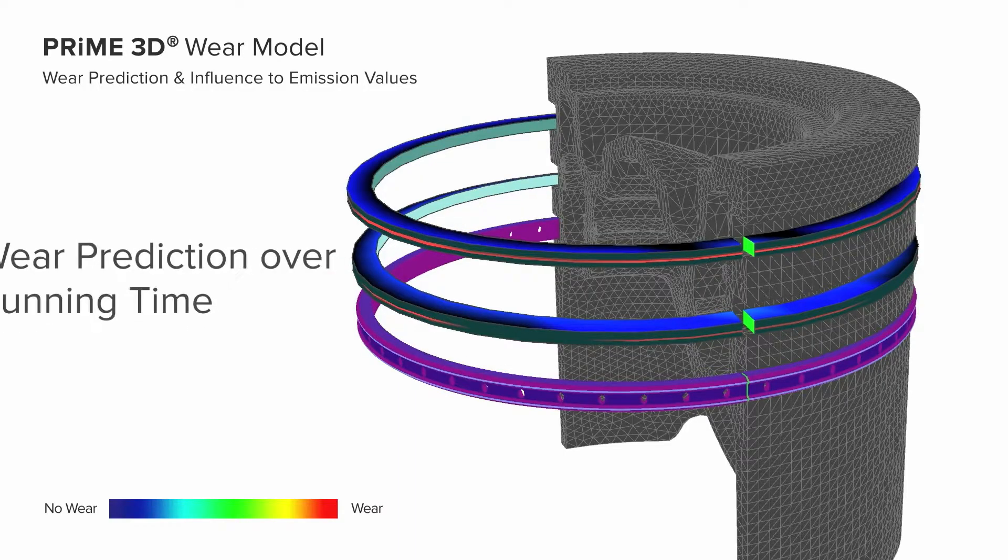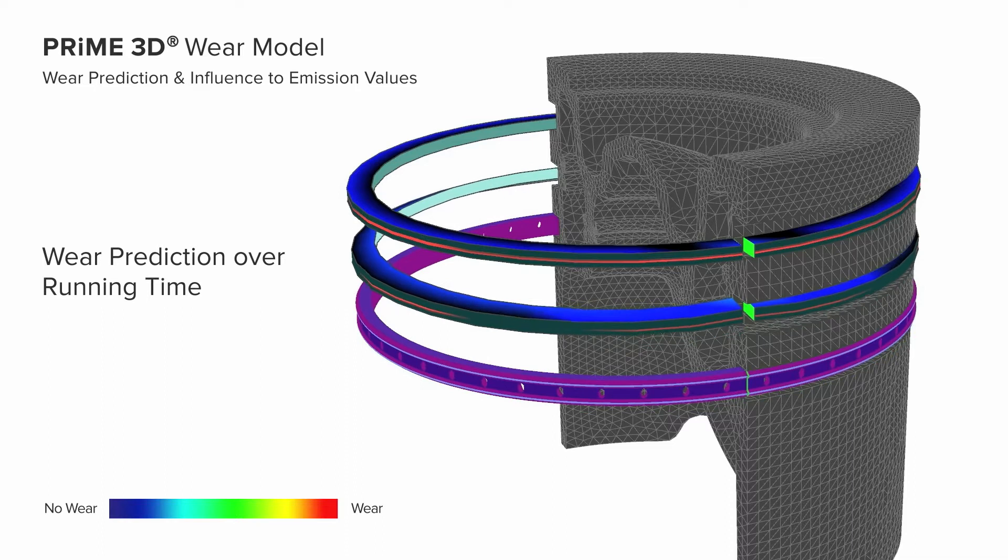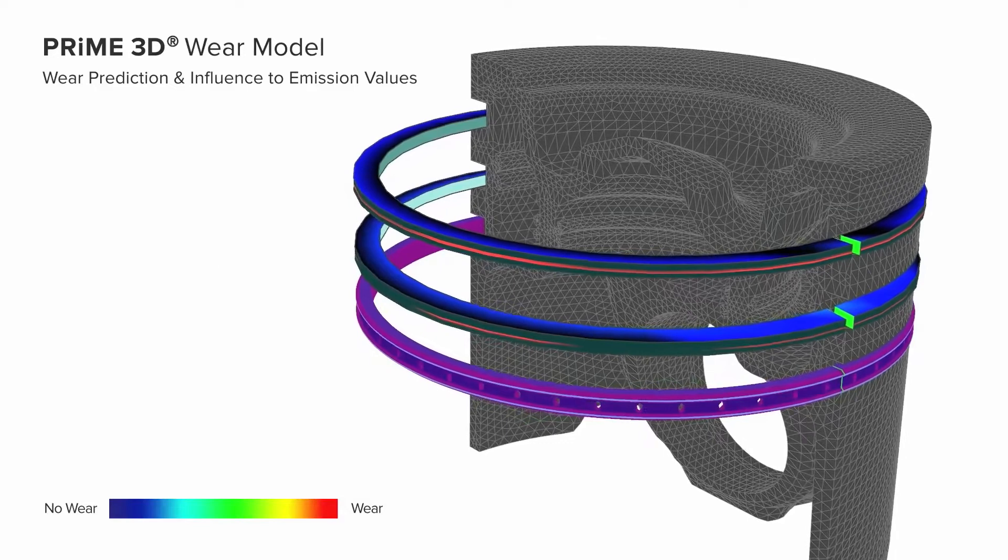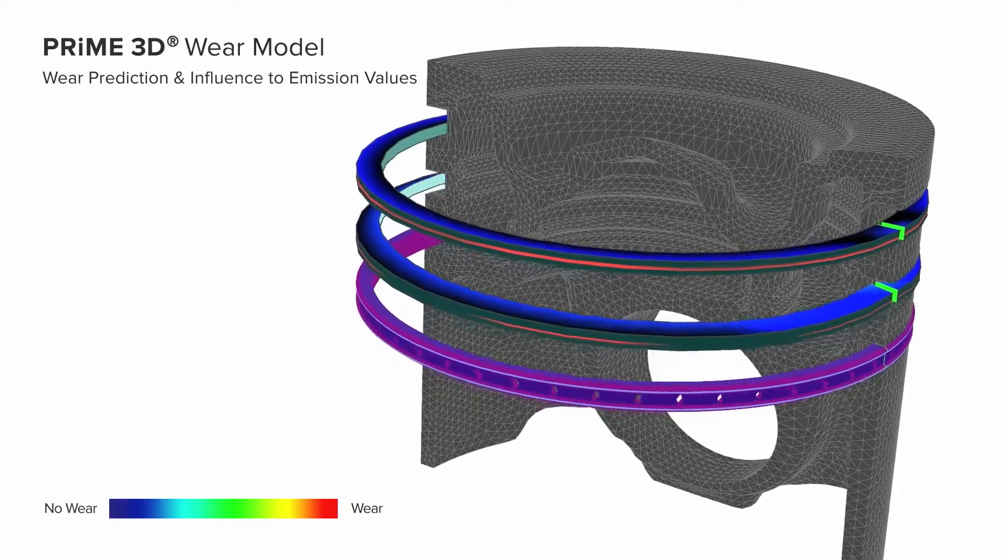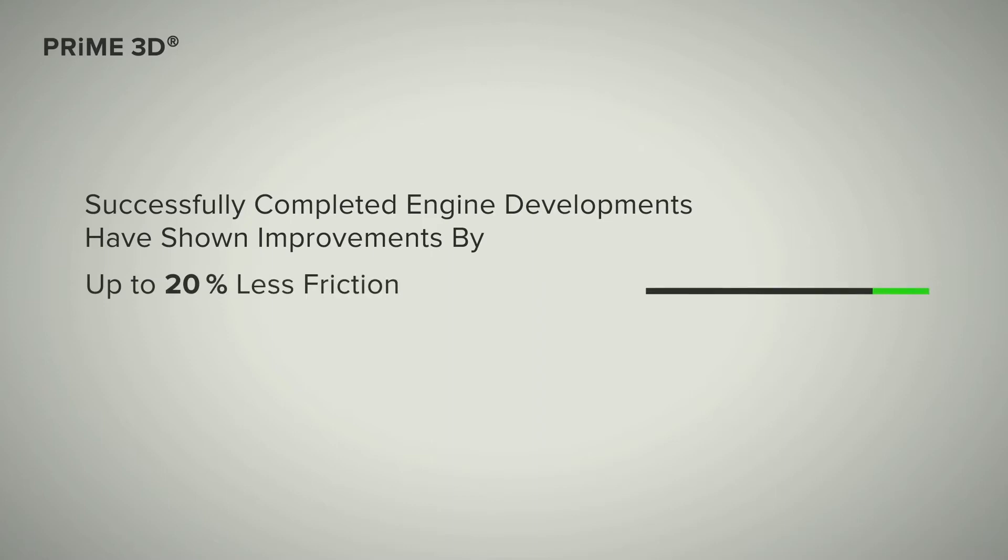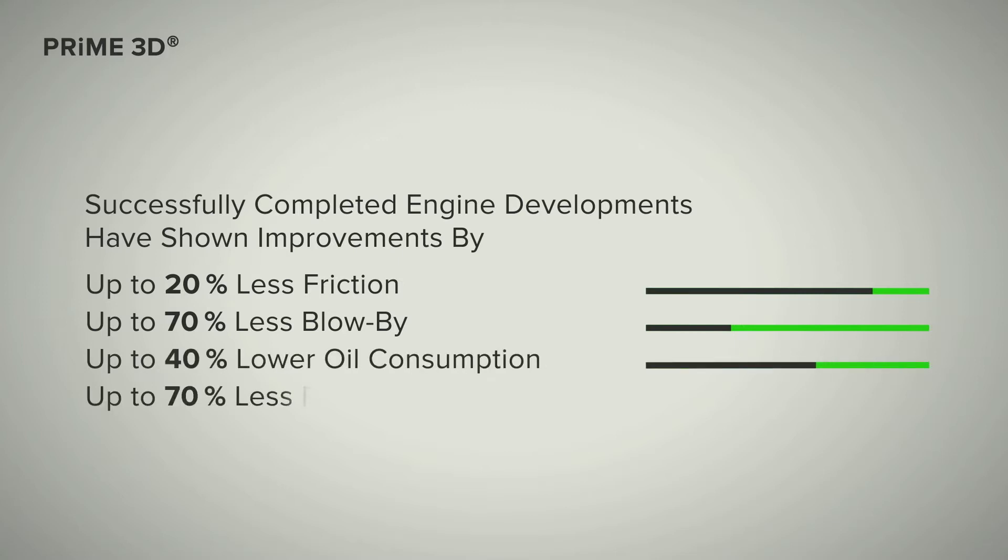Thanks to this highly efficient, proprietary method, significant emissions and fuel consumption reductions can be achieved through the simple deduction of specific piston and piston ring design changes. Successfully completed developments have shown improvements by up to 20% less friction, up to 70% less blow-by, up to 40% lower oil consumption, and up to 70% less particulate emissions.